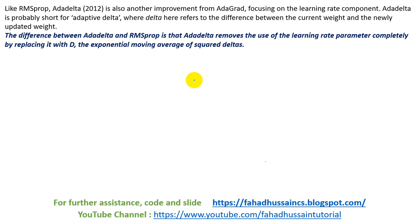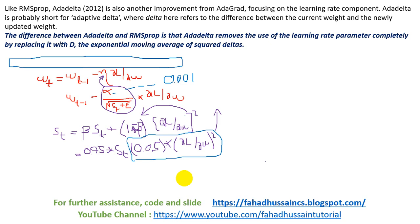AdaDelta removes the use of the learning rate parameter completely by replacing it with DT. So our learning rate alpha will be converted to the square root of the exponential moving average of the square delta. What we have done in the equation is that alpha is replaced by the square root of DT, and epsilon's value will be added inside DT just as we have inside ST.